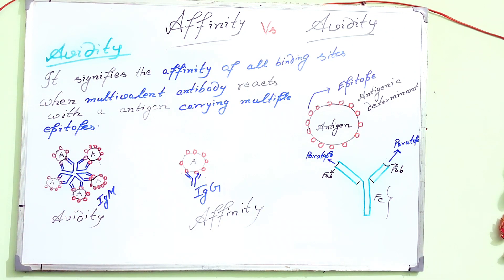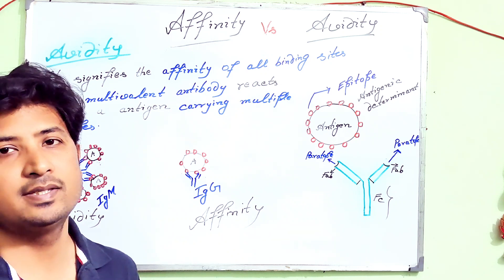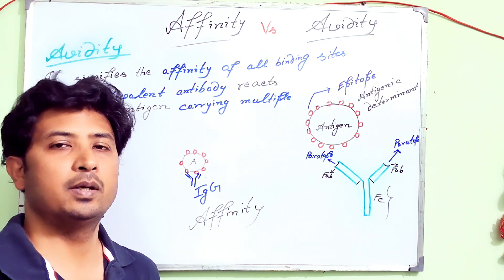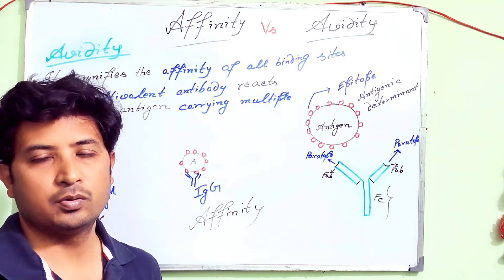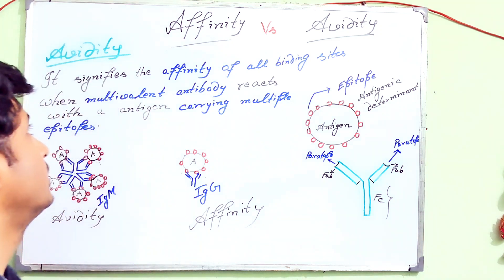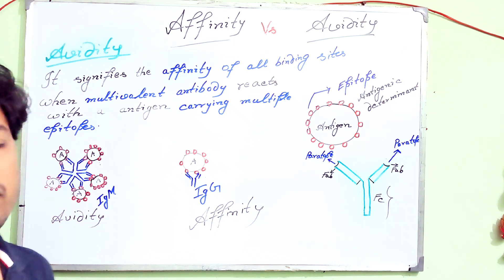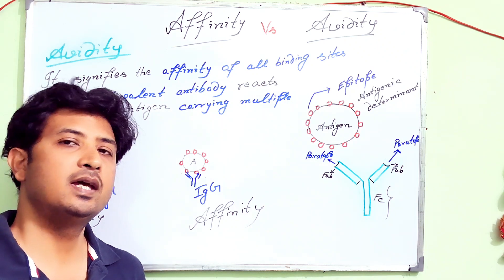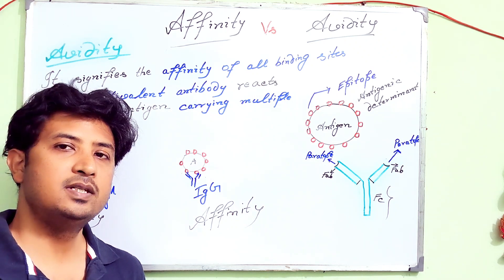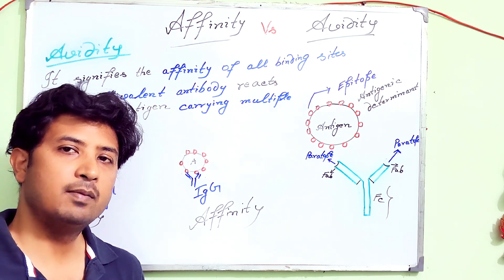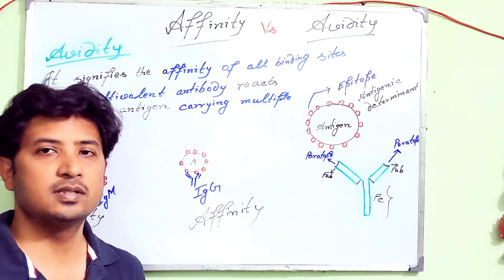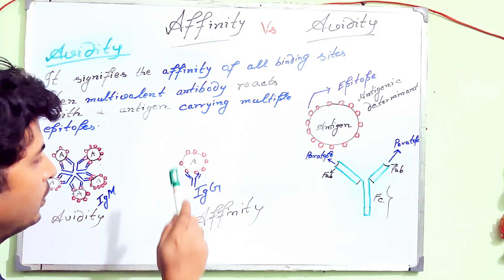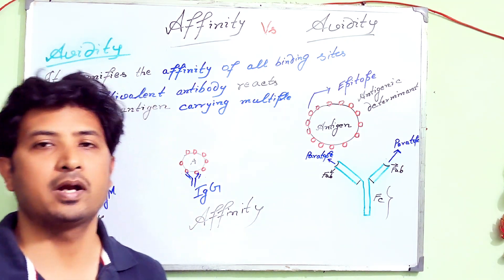Avidity signifies the total affinity of all binding sites in a given antibody if it is multivalent and a multiple epitope-containing antigen. The very important part is it has to be a multivalent antibody. You have read five antibodies: IgM, IgG, IgA, IgE, and IgD. IgA is a dimer, IgM is a pentamer, and IgG is a monomer. IgG is having only two valences or two parotopes for binding.